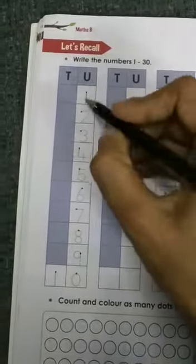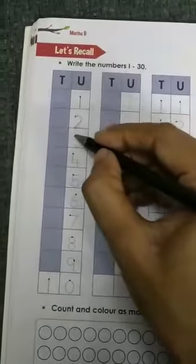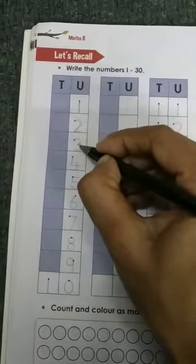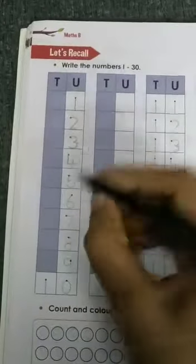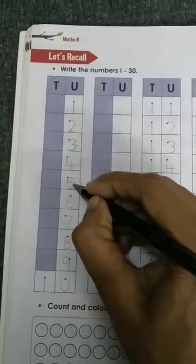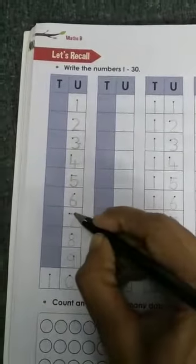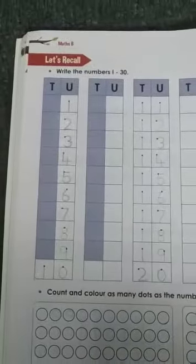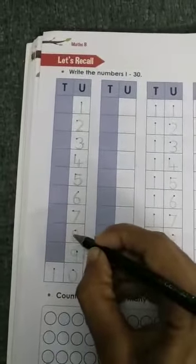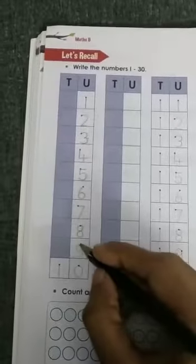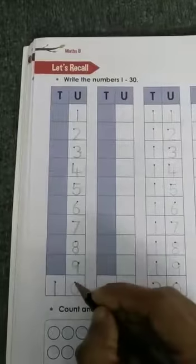We have given dots, you have to first trace the numbers from 1 to 30, then you will write yourself, okay? 1, 2, 3, trace on the dots. 1, 2, 3, 4, 5, 6, 7, 8, 9, 10.